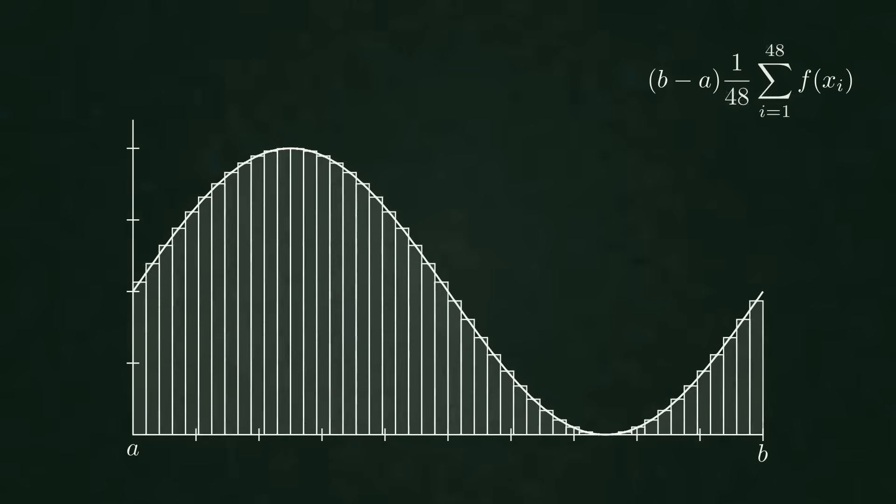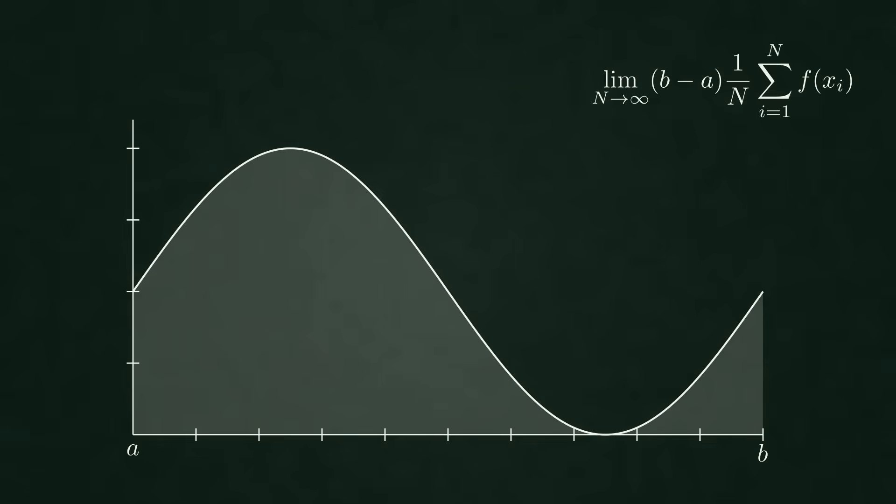but the structure stays the same. Length of the interval times the average of evaluations. In the limit, this becomes our integral. Soon we will stop relying on rectangles entirely. And from that single shift, everything else will follow.